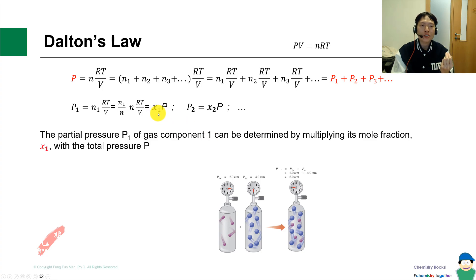X1 is a mathematical representation of the mole fraction: the number of moles of one over the total number of moles of gases. X2 means the number of moles of two over the total number of gases.